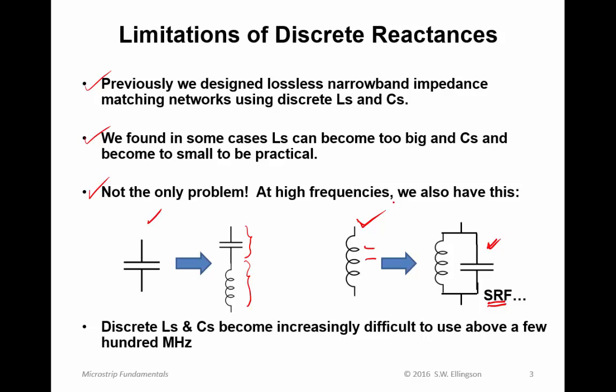Typically, what's required when this effect is significant is you have to account for that capacitance, and then the circuit design becomes very, very complicated. As a result, discrete L's and C's become increasingly difficult to use above a few hundred megahertz. This effect can become significant at frequencies as low as tens of megahertz in the HF band. In other cases, you may be able to accommodate these problems at frequencies well into the gigahertz SHF region. Once we get in the HF, VHF, UHF range, we often find this problem is sufficiently onerous that we would like to find some other way to do impedance matching.